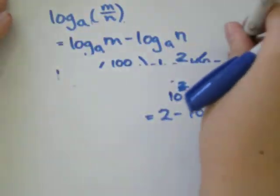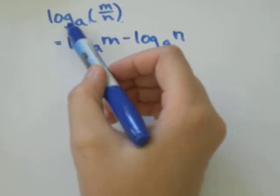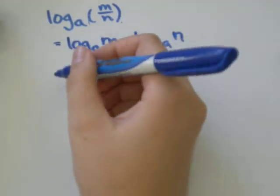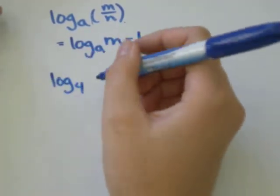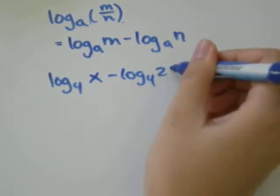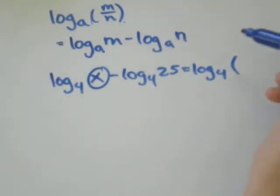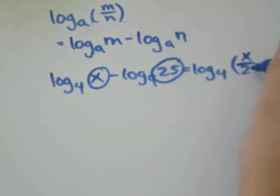You might see questions where you're asked to do the opposite. You'll see it written as one log minus another log, and you'll need to put it into log base a of m over n form. So if you had log base 4 of x minus log base 4 of 25, that would be log base 4 of x over 25.